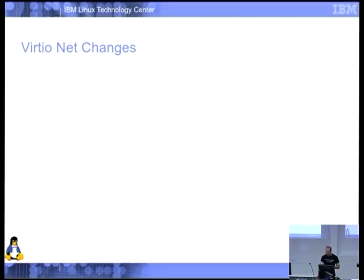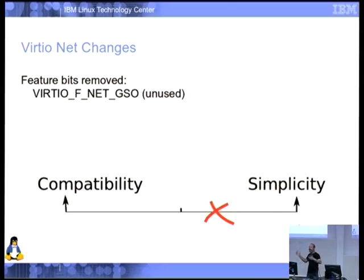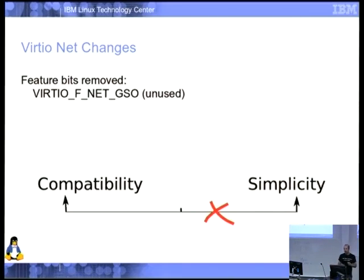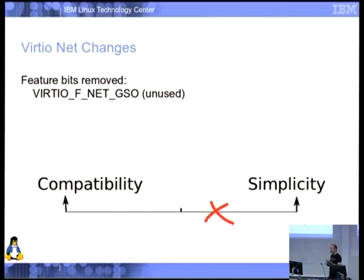VirtioNet changes: first, I pulled out a feature bit that was never used. Modern network cards can do GSO — generic segmentation offload — where you send a big packet and the card chops it into little ones. I added a feature bit saying 'we do GSO,' but when I came to implement it, there are specific types: TSO4, TSO6 for TCP v6, UFO, and ECN bit handling. So I exploded it into four specific feature bits, and the generic GSO bit, which was never used by anyone, is gone.